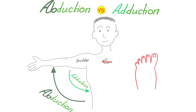When it comes to your digits — fingers and toes — abduction and adduction are slightly different. Abduction means your digits are moving away from each other, fanning out; it's movement away from the long axis of the second toe or middle finger. Adduction is the exact opposite: movement of your fingers or toes closer to that long axis.